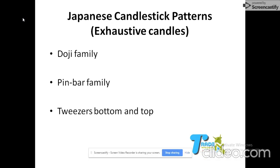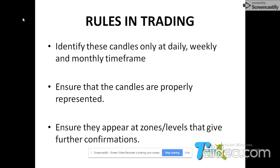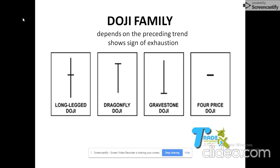The next tool is Japanese candlestick patterns — we are focused on exhaustive candles. We have the Doji family, the Pinbar family, and Tweezers (bottom and top). The rules: identify them on the daily, weekly, and monthly time frames; ensure the candles are properly represented; and ensure they appear at zones or levels for further confirmation.